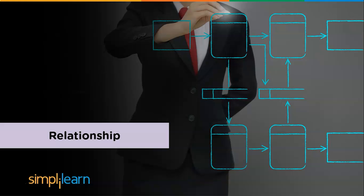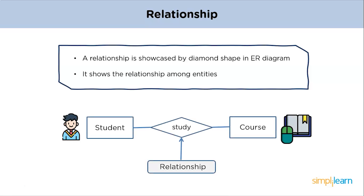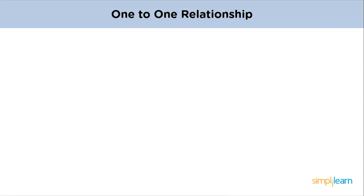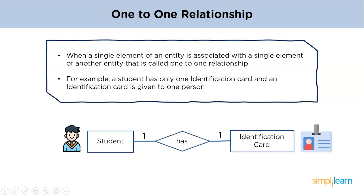A relationship is showcased by the diamond shape in the ER diagram and depicts the relationship between two entities. In the example, student and course are entities and 'studies' is the relationship between them. The first type is one-to-one relationship — when a single element of an entity is associated with a single element of another entity. For example, a student has only one identification card and an identification card is given to one student, representing a one-to-one relationship.